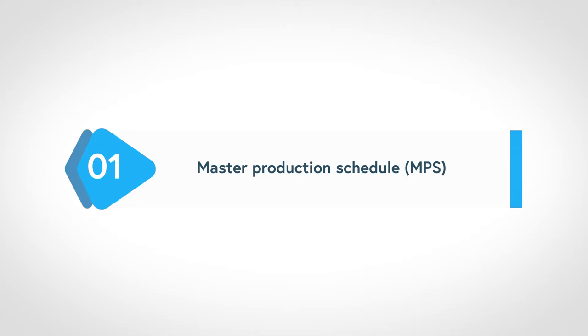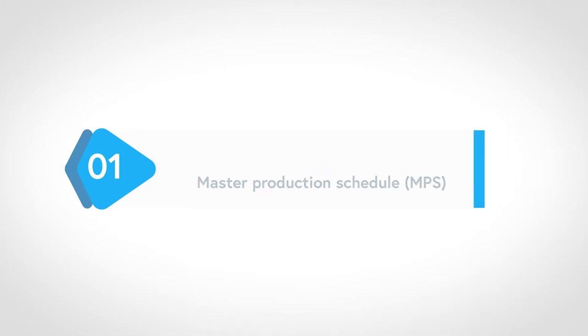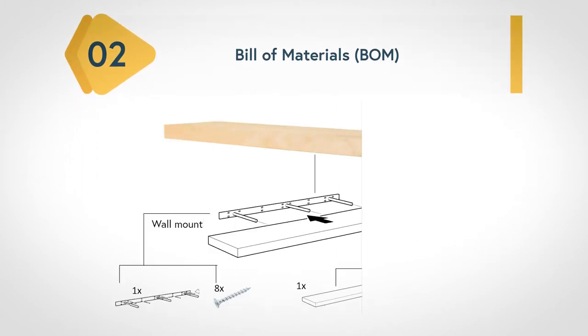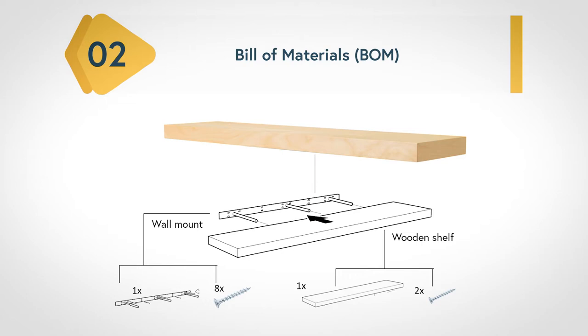Inputs to the master production schedule are customer orders and forecasts. Second, you need a bill of materials, which is a listing of all the raw materials, parts, sub-assemblies, and assemblies needed to produce one unit of a product. To illustrate, consider this simplified bill of materials of an IKEA lock shelf — the product is broken down into sub-parts and quantities. In process industries, the bill of materials is also known as the formula, recipe, or ingredient list.